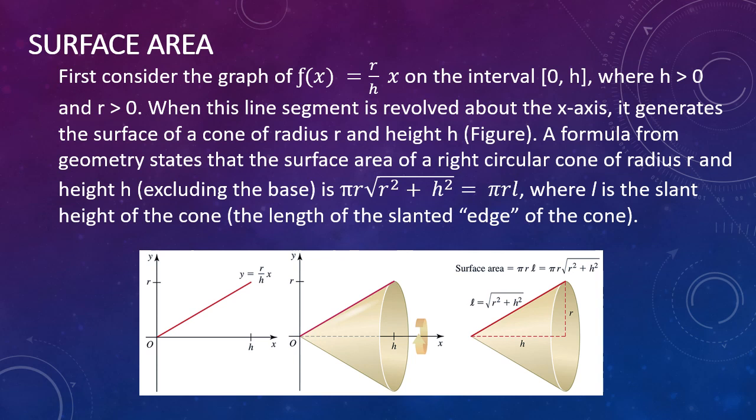As part of the build of the proof, we're going to first consider the graph of f of x, which equals r over h times x on the interval from 0 to h, where h is greater than 0 and r is greater than 0. You can see this in the image below, showing both the line segments and the solid of revolution.